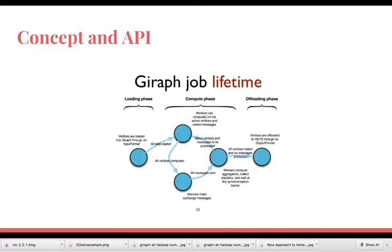The concept and API of Giraph is based on three major phases in the whole flow. First is the loading phase, then the computation phase, and then offloading phase. In the loading phase, the vertices are loaded into Giraph through an input format. In our demonstration we will have a look at some of the input formats. This could be JSON, it could be adjacency lists or it could be text input files. Here we just provide the information about our nodes, about our edges, and then the cost of edges to the Hadoop Giraph job.